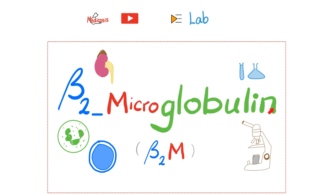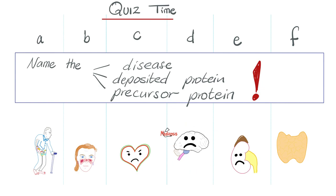If you want to learn more about beta-2-microglobulin and why it's related to the kidney, check out my video titled beta-2-microglobulin in my playlist called Labs. Now, quiz time! Here are six patients presenting to you. With each one, name the disease, name the deposited amyloid protein, and the precursor that came before that protein. Pause and review, and let me know the correct answers in the comment section. You need to practice active recall — if you want to strengthen your memory, use your memory. Use it or lose it. It's called disuse atrophy, and it's even in the pathology textbook.